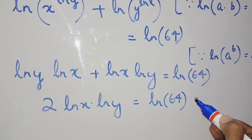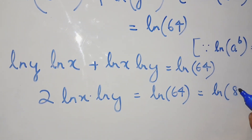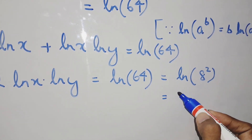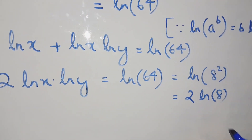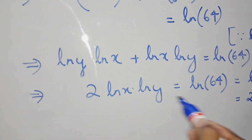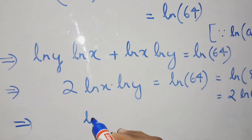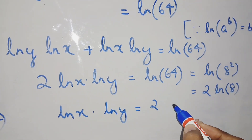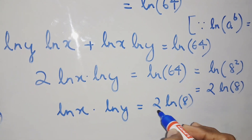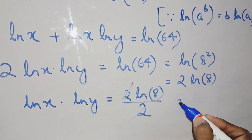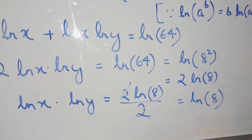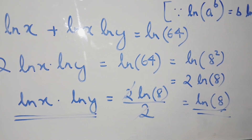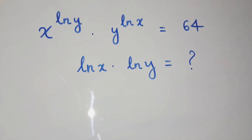We can write ln 64 as ln 8 squared. Since ln(a to the power b) equals b times ln a, this becomes 2 times ln 8. Dividing both sides by 2, we get ln x times ln y equals ln 8. That is the answer from this first method.